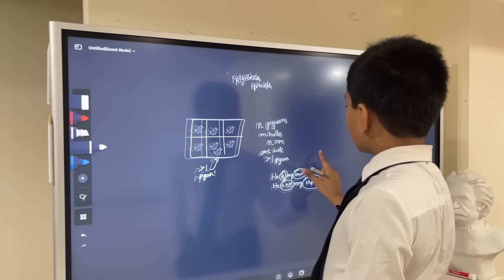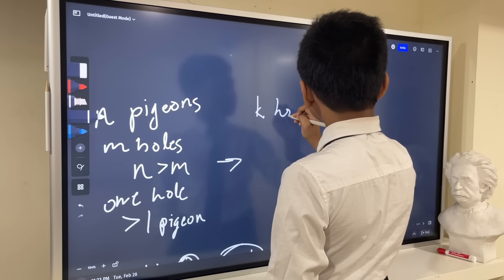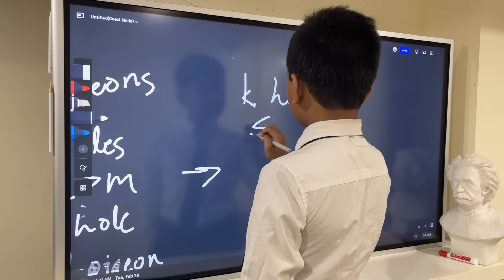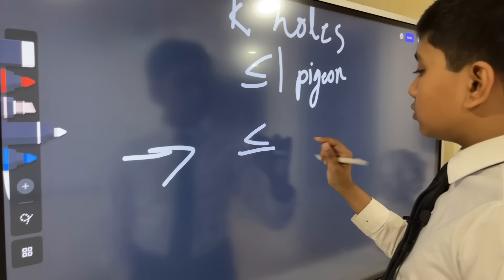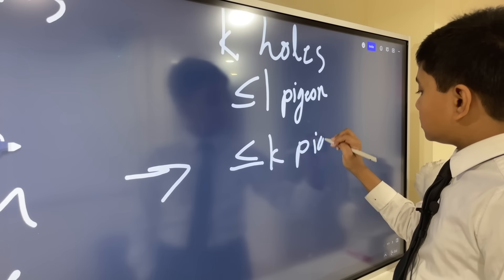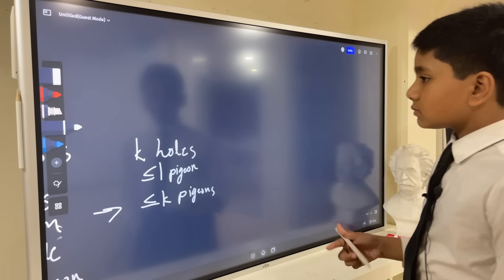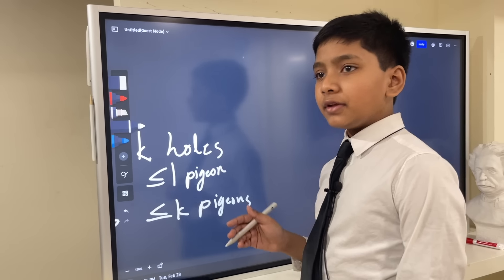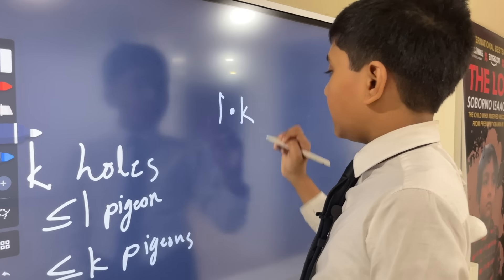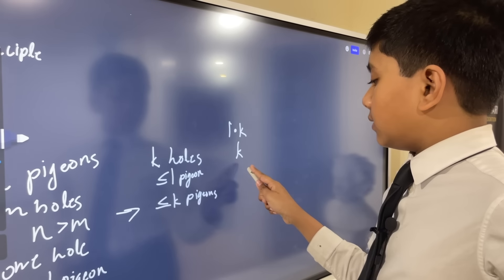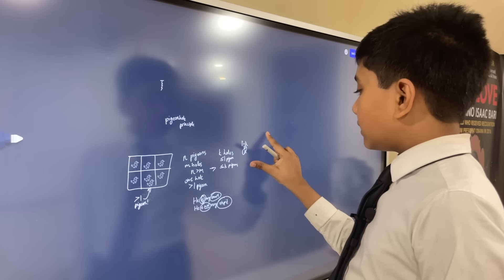So, we can take the contrapositive and basically say that if there are k holes, and each hole contains less than or equal to one pigeon, then there must be, at most, k pigeons. So, there must be less than or equal to k pigeons. So, how is this statement true? Well, think about it. The max amount of pigeons we can have here, if each hole has one pigeon, would be for every hole to have one pigeon, and then, to find the total number of pigeons, you multiply it by k, because there were k holes. So, that means that the maximum amount of pigeons in k holes, if there must be less than one or equal to one pigeon in each hole is k. So, that is basically a proof of it.